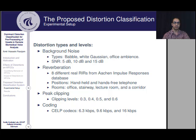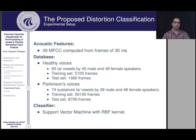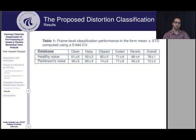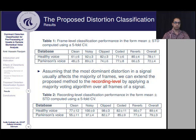For peak clipping, we set the clipping level to 0.3, 0.5, and 0.6. For coding, we used the CELP codec at three different bit rates. We used 39 MFCC features computed from frames of 30 ms and two different databases: the healthy voice database, containing 93 vowel-A utterances by 45 males and 48 females, and the Parkinson's voice database, containing 74 sustained vowel-A utterances by 26 male and 48 female speakers. We used a support vector machine with radial basis function kernel as the classifier. Assuming that the most dominant distortion usually affects the majority of frames, we extend the proposed method to recording level by applying a majority voting algorithm over all frames of a signal.